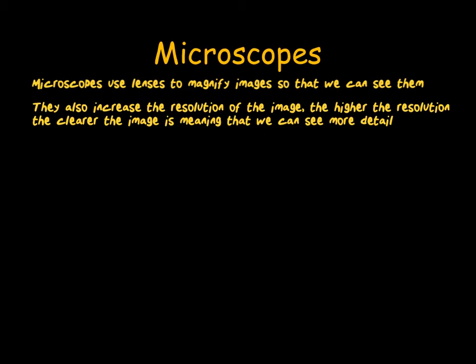So what are microscopes? Microscopes allow us to look into the microscopic world, for example, to look at cells. They use lenses to magnify the images and make them bigger. They also increase the resolution of an image. Resolution means how well distinguished two points are, similar to on your TV where you might have 1080p resolution or 4K resolution. The higher the resolution, the clearer the image so you can see more detail.